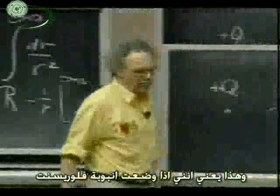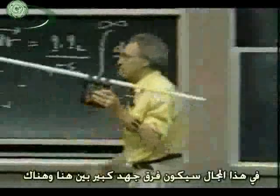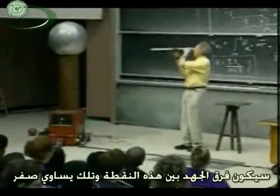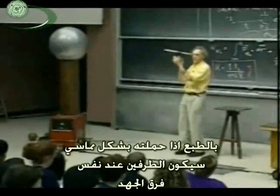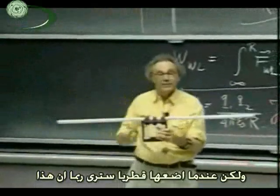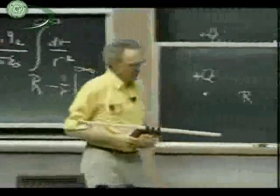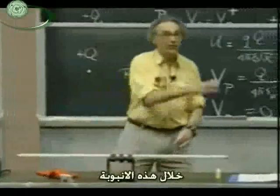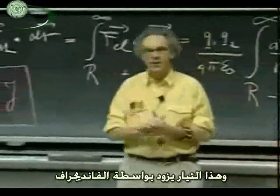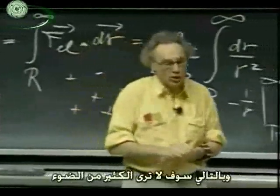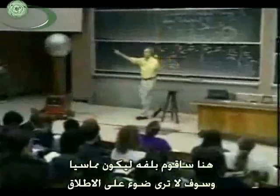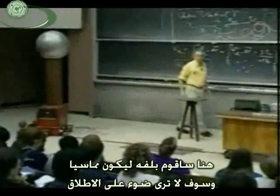If I place this fluorescent tube into that electric field, there would be a gigantic potential difference between the two ends, provided that I hold it radially. If I hold it tangentially, the potential difference between the two ends would be zero — they would both be at the same electric potential. But when I hold it radially, you will see that this fluorescent tube will show a little bit of light. Once you see light, it means electrons are moving through the gas — a current is flowing — and this current is delivered by the Van de Graaff, which can only provide very modest currents.